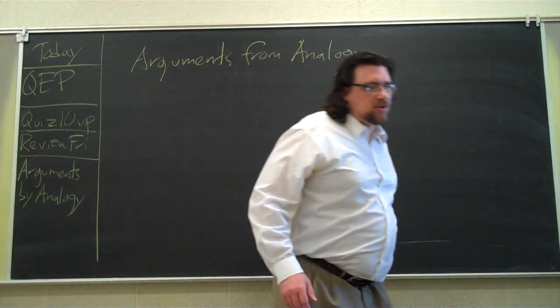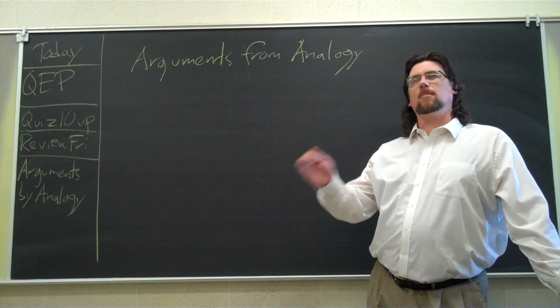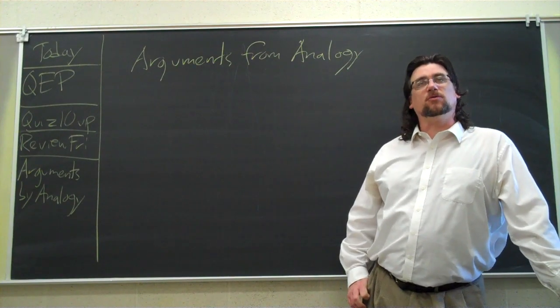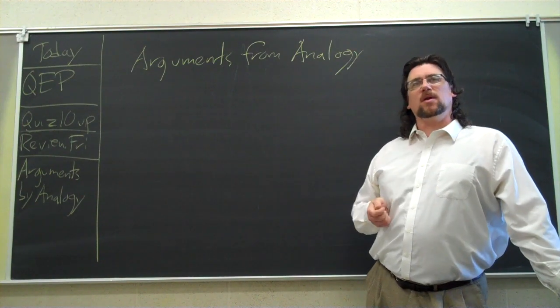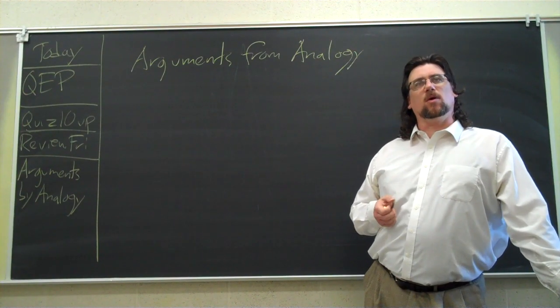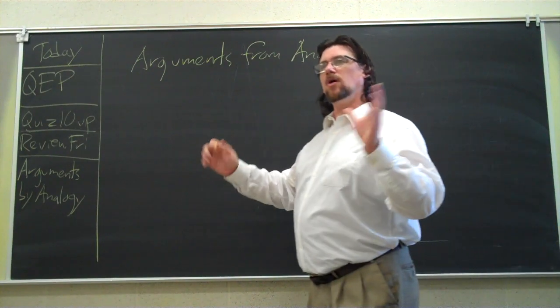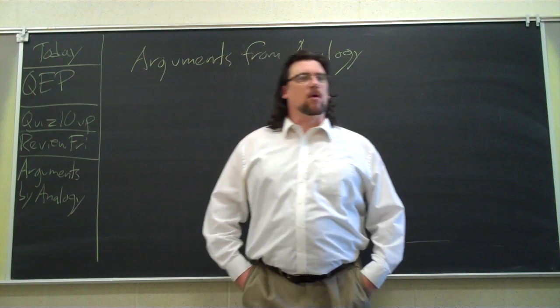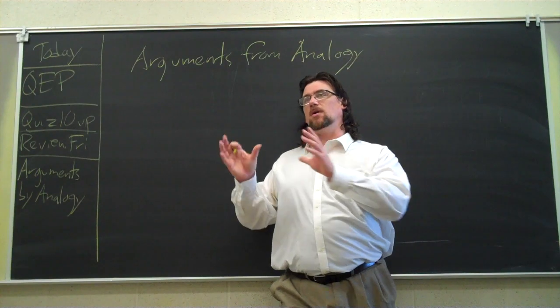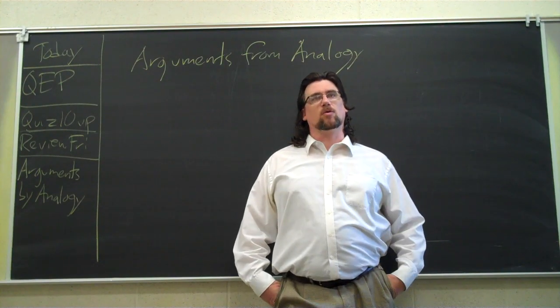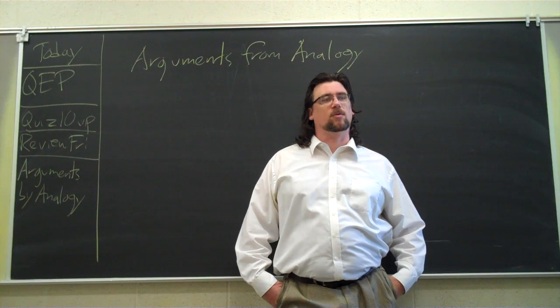All right, so we're talking about analogies, and we're using the example of dog, cat, puppy, kitten. There's a structural similarity, a connection between them. When we're talking about arguments from analogy, what you're doing, instead of going from large groups to members of the groups, or from members of the groups to the large group, you're talking about smaller entities. You're talking about maybe just a single person being compared to another person, or one group of people being compared to another group of people, or a historical event being compared to other historical events.